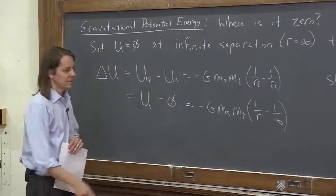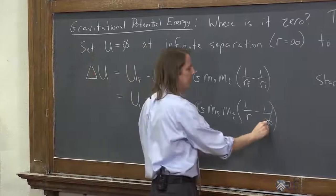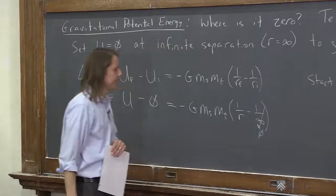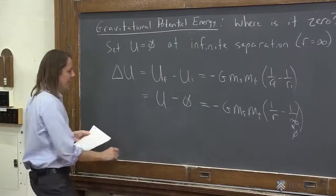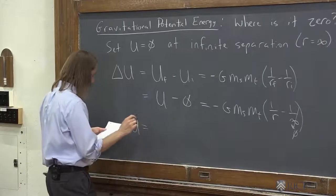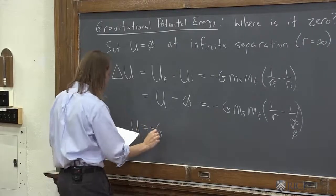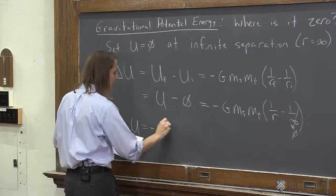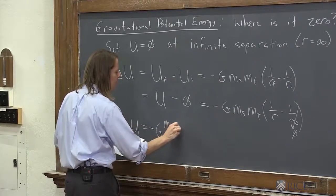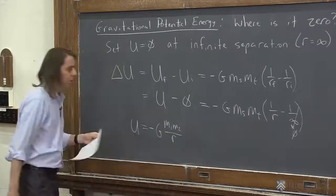But just like this is zero, one over infinity is also zero. So that's how we can get the absolute u. The gravitational potential near, if you're one mass near another mass, is minus g m1 m2 over r, like that.